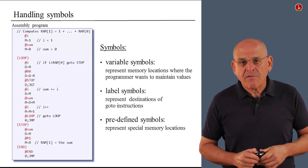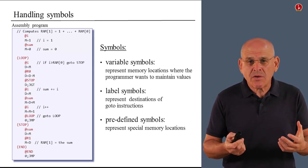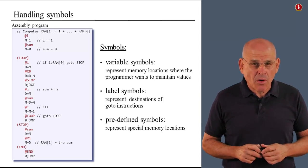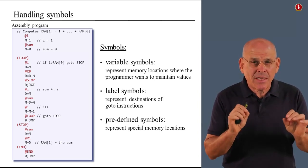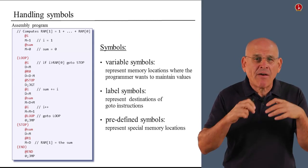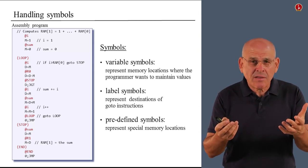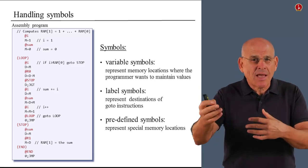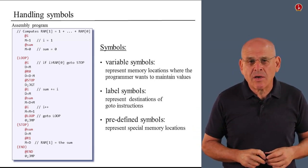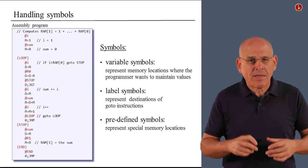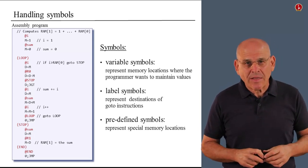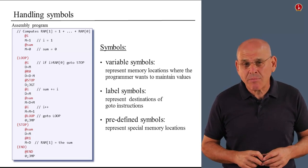First of all, we have variable symbols. Variable symbols represent memory locations where the programmer wants to maintain some values that typically change in the course of executing the program. Now, this sentence is a little bit misleading because the programmer doesn't care at all where these variables are actually located in memory. As far as the programmer is concerned, he or she is going to say something like at sum or at x or at y, and let the assembler worry about where to store or represent these variables in memory. Once again, this is a very nice abstraction that the assembler delivers to the practicing programmer.